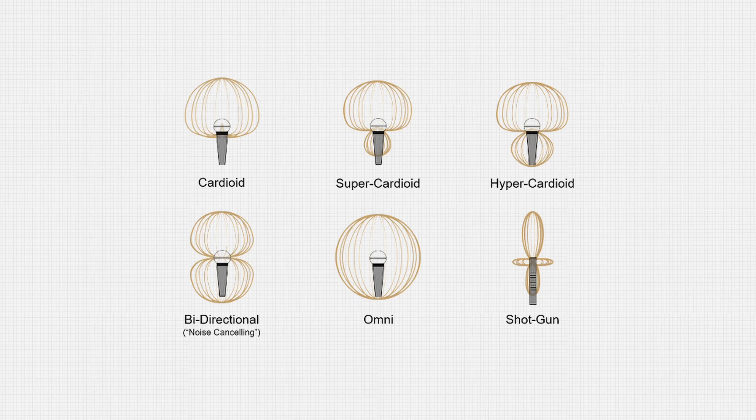Most microphones have a fixed polar pattern such as cardioid, figure-8, omnidirectional, etc. For the sake of demonstration, let's use this Austrian Audio OC818, which allows me to switch between different polar patterns. If I place the microphone in omnidirectional mode, it will pick up sound evenly from all directions. But if I switch the mic to cardioid, it will reject sound from the rear.